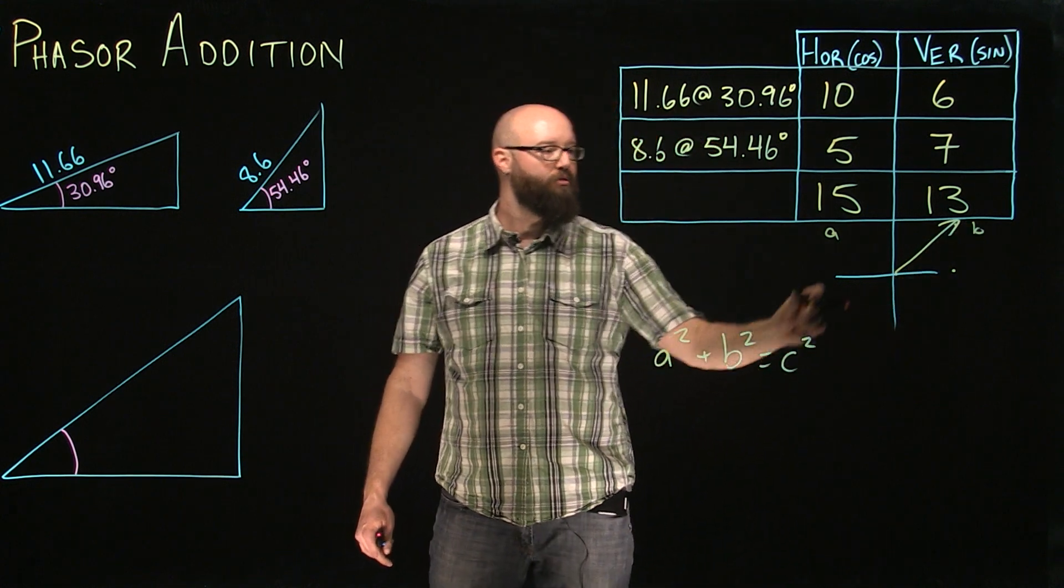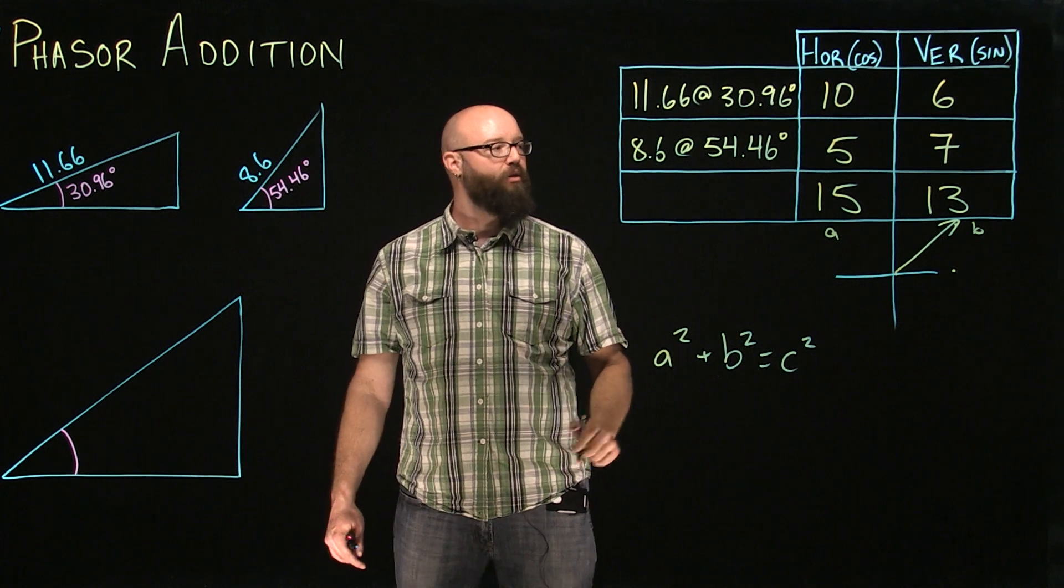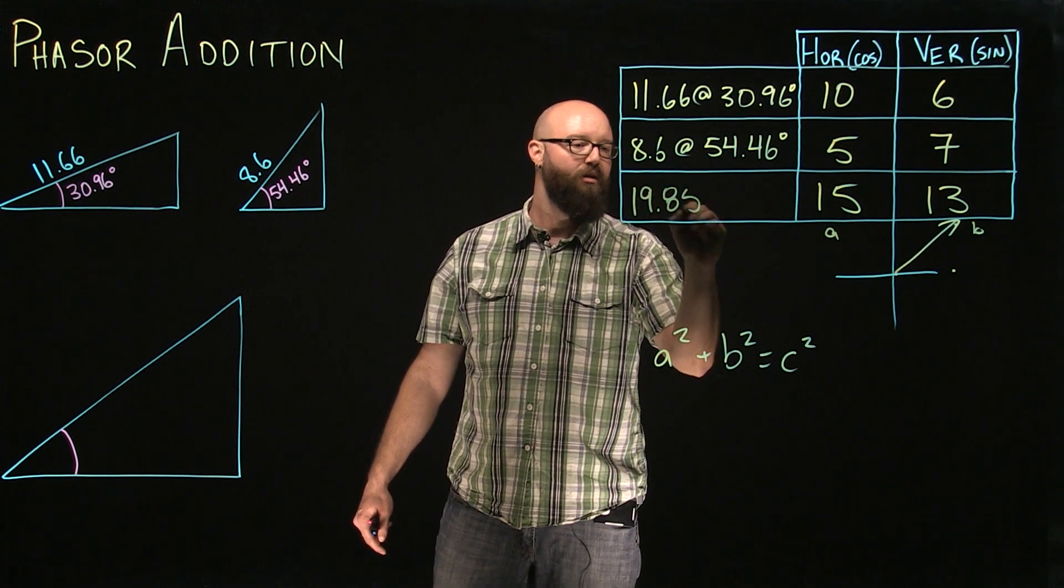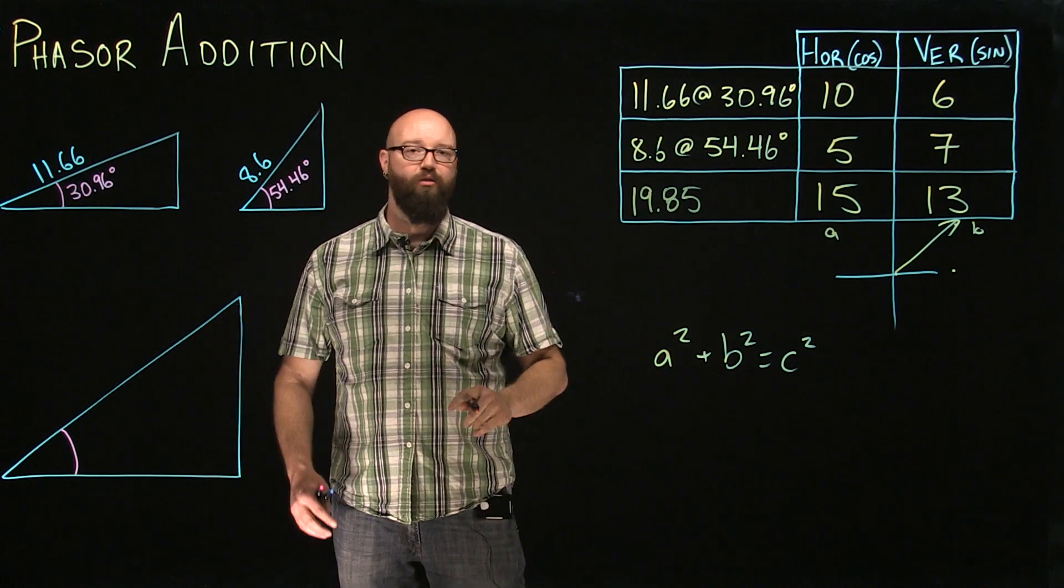Other way around. A squared plus B squared equals C squared. We should end up with a resultant hypotenuse of 19.85. Now, there's the magnitude of our resultant hypotenuse.